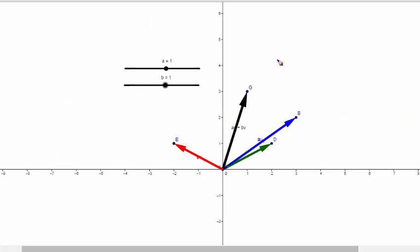Here's a little picture. This blue vector here is u, which is 3, 2. The red vector here is v minus 2, 1, and the green vector over here is the vector 2, 1.